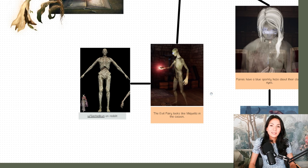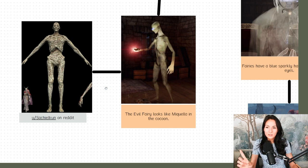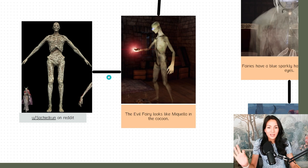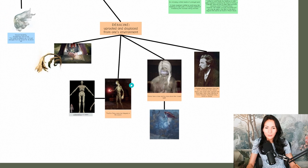The evil fairy in Deracine that you see, I think looks so much like Miquella inside the cocoon. Look at the similarities between the evil fairy and Miquella inside the cocoon. They look the same to me. And now I'm thinking, what if all those giant bodies in Siofra River and Ainsel River are fairies?